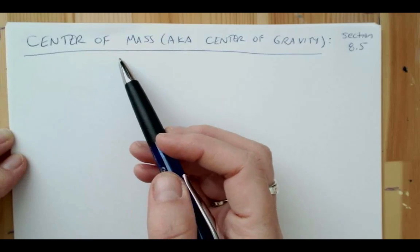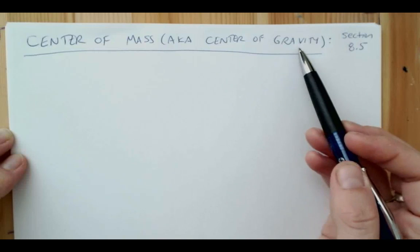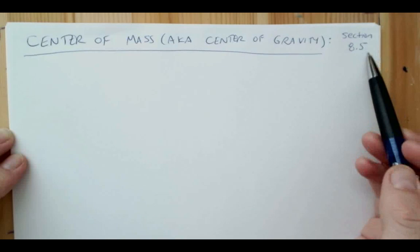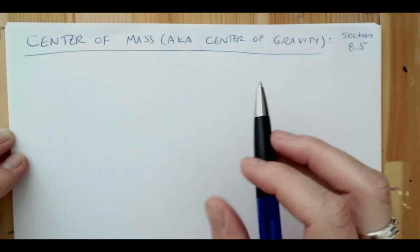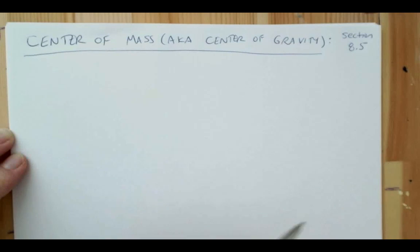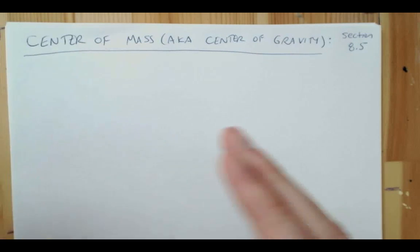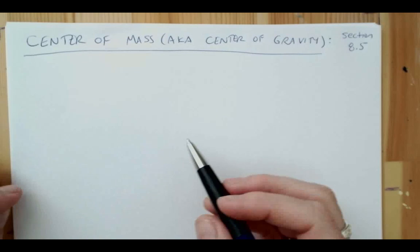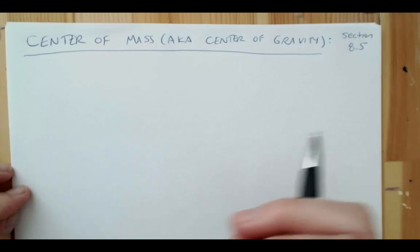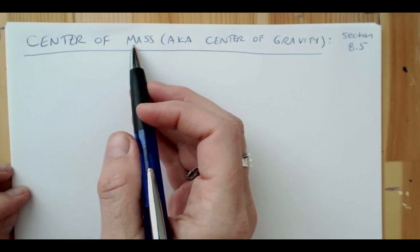In this required pre-lecture video we'll be talking about the idea of center of mass, which is also sometimes called the center of gravity. This comes from section 8.5 of your text. So far in this course we've talked about the motion of objects and have assumed that they're basically point particles located in one space. However, a lot of things actually have a dimension associated with them, or there might be a system of particles. It turns out that everything we've learned applies to what's called the center of mass of the particle.